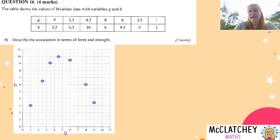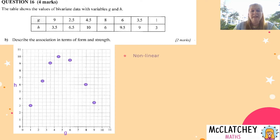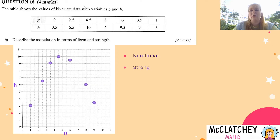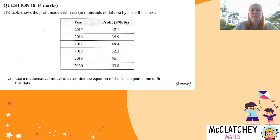The next part requires us to describe the association in terms of form and strength. It's an interesting scatterplot because it forms a very clear pattern — it's a non-linear graph, basically an upside-down parabola. Because it follows a very precise curve we can say the strength is strong. That earns us our final two marks: one for non-linear and one for strong.